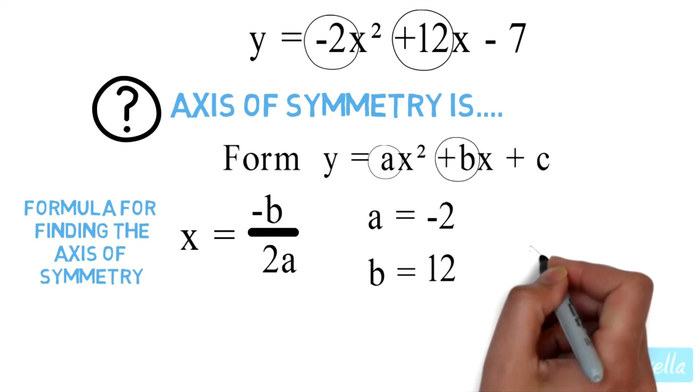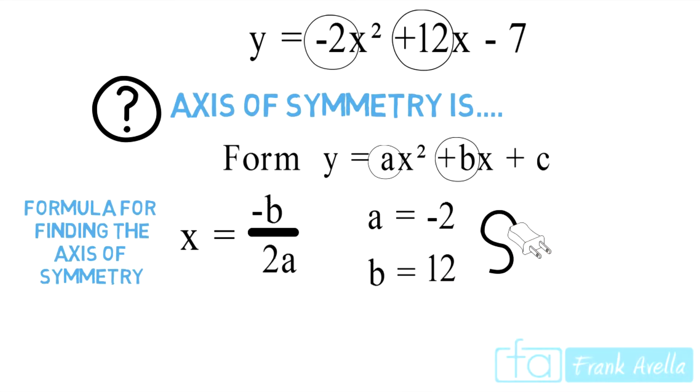Because it's a formula, now we're going to do a simple plug-in by plugging these values into the formula. x equals negative 12 divided by 2 times negative 2. That's negative 12 divided by negative 4, which will equal 3. x equals 3.